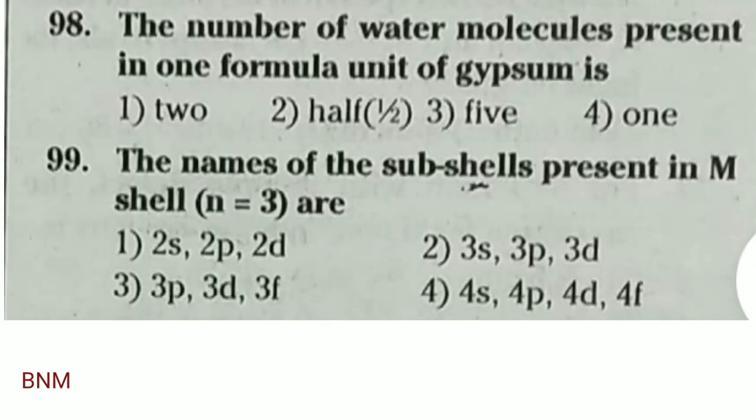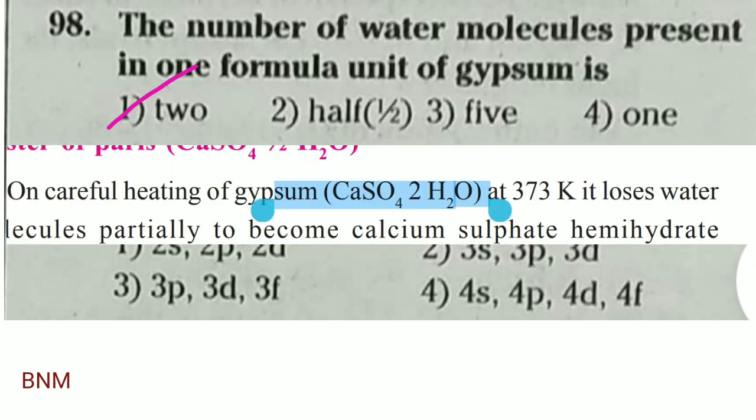The number of water molecules present in one formula unit of gypsum — the formula for gypsum is CaSO4·2H2O, so there are 2 water molecules. The first option, 2, is the right answer.